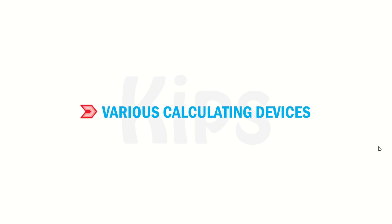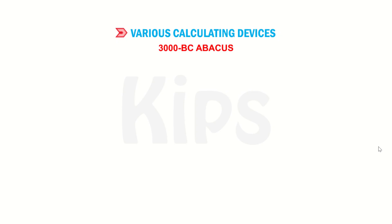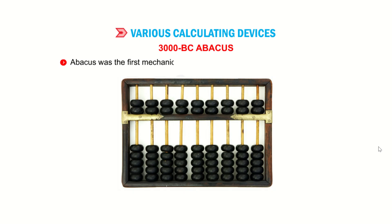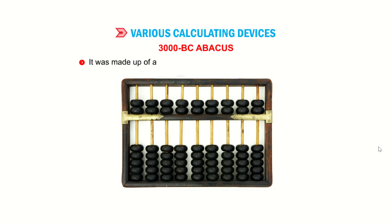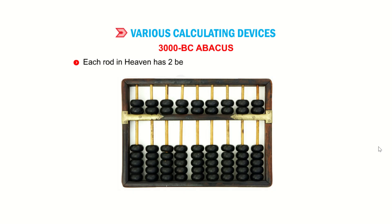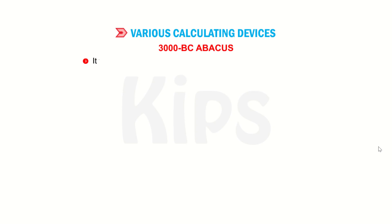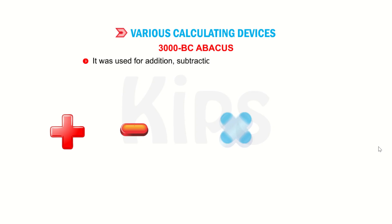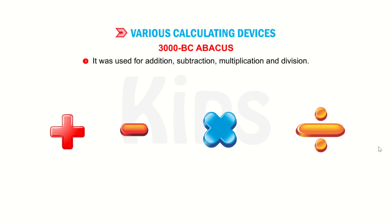Now let us talk about calculating devices. 3000 BC — Abacus. The Abacus was the first mechanical device for calculations, developed in China. It was made up of a wooden frame with rods, each having beads. The frame is divided into two parts: heaven and earth. Each rod in heaven has two beads and each rod in earth has five beads. It was used for addition, subtraction, multiplication and division.